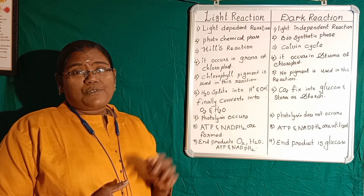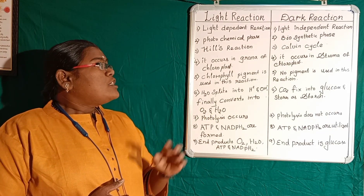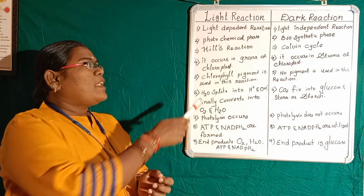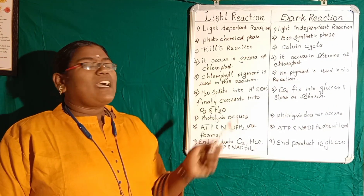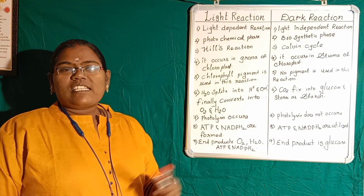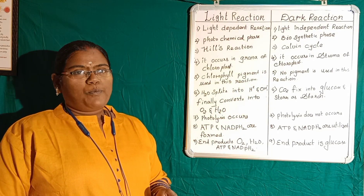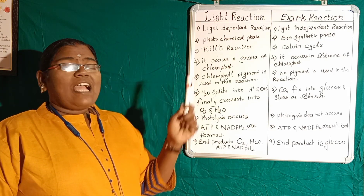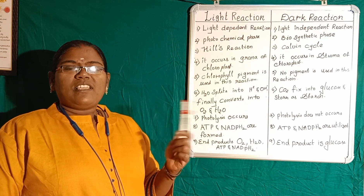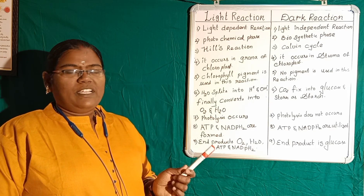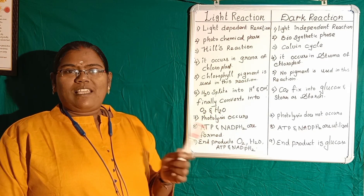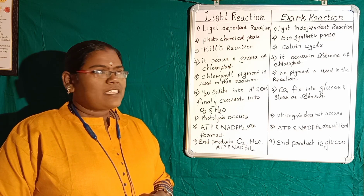Next, where does each reaction occur? The light reaction occurs in the grana of the chloroplast. The dark reaction occurs in the stroma of the chloroplast. Grana is made up of thylakoid membranes, where chlorophyll is filled. In the case of stroma, all the enzymes required for the dark reaction are present.